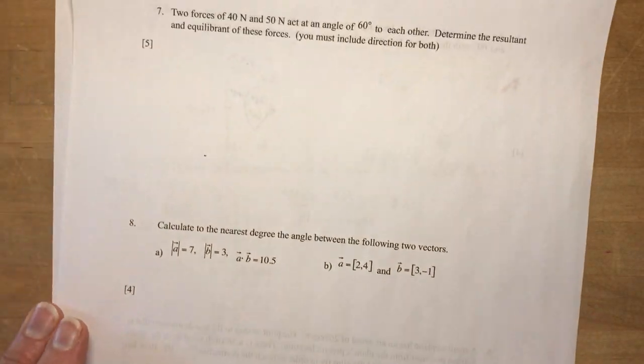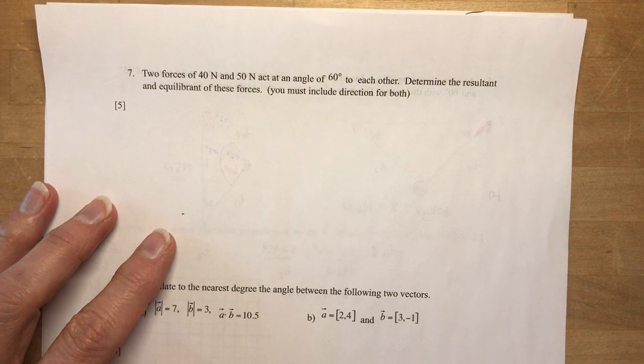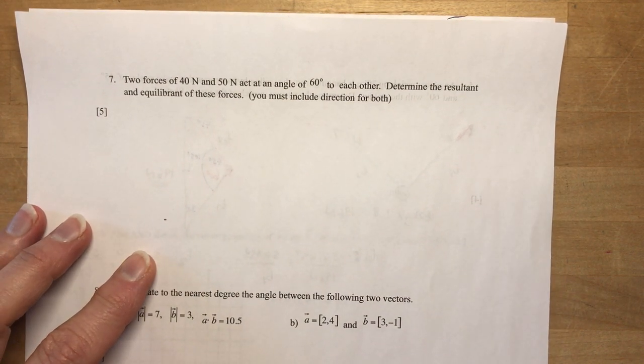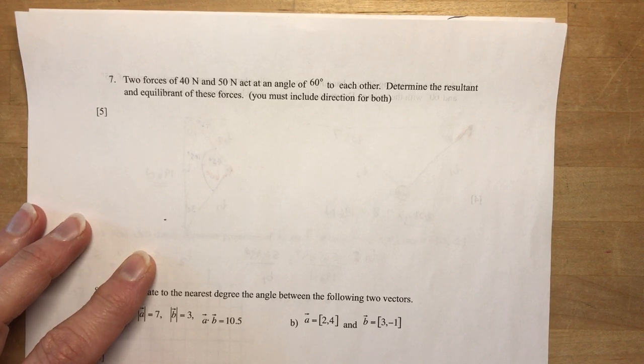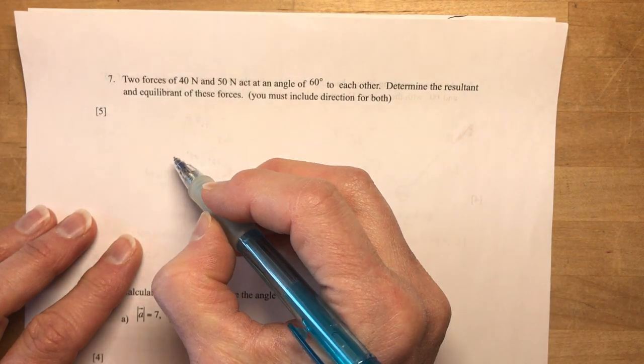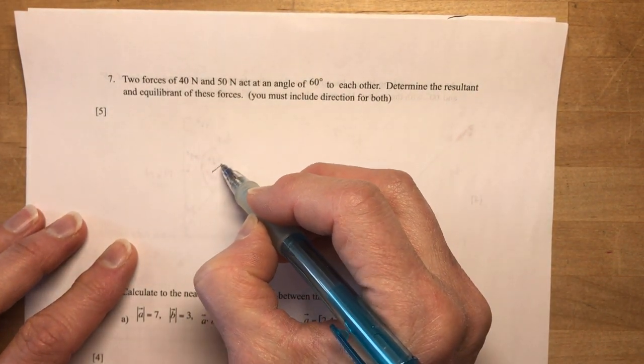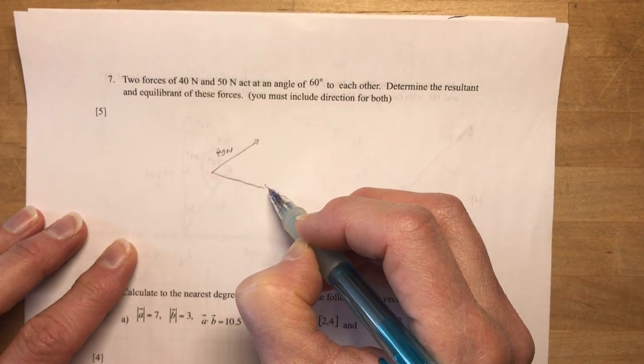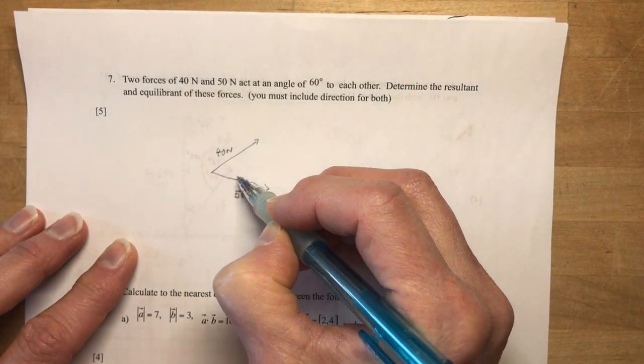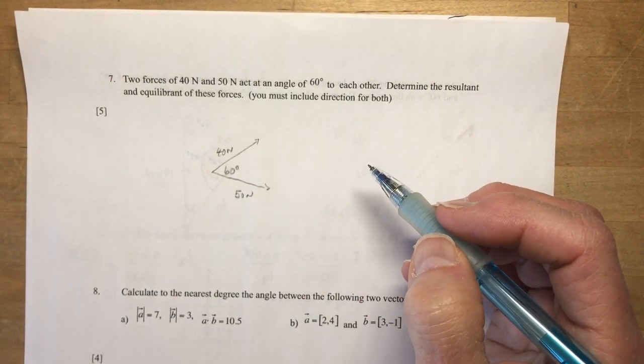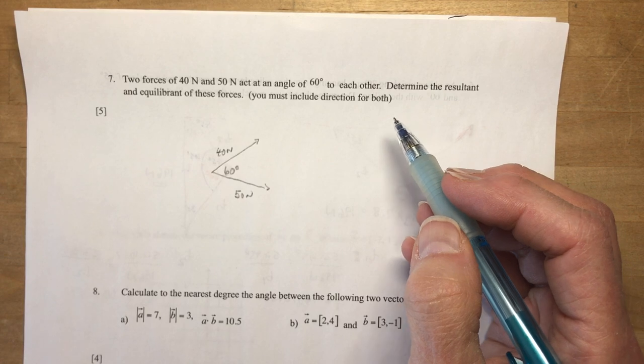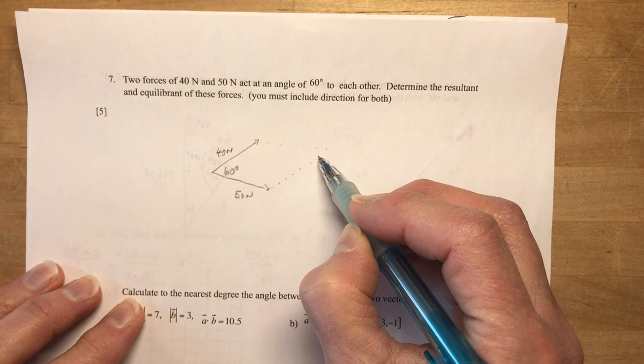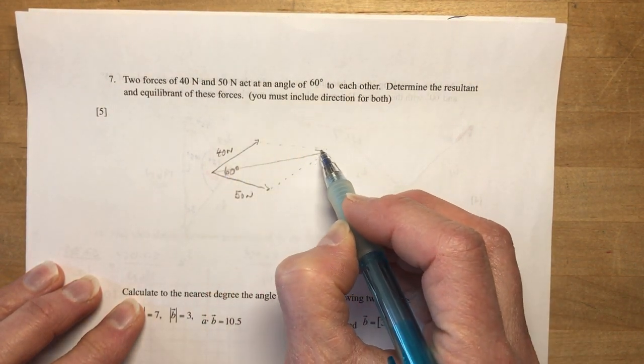Number seven, it says two forces of 40 newtons and 50 newtons act at an angle of 60 degrees to one another. Determine the resultant and equilibrant forces. So if you want to know the resultant, let's draw it first. So we have 50 newtons. I'm going to put it about here. So I have 40 newtons and I have 50 newtons and I have 60 degrees between them.